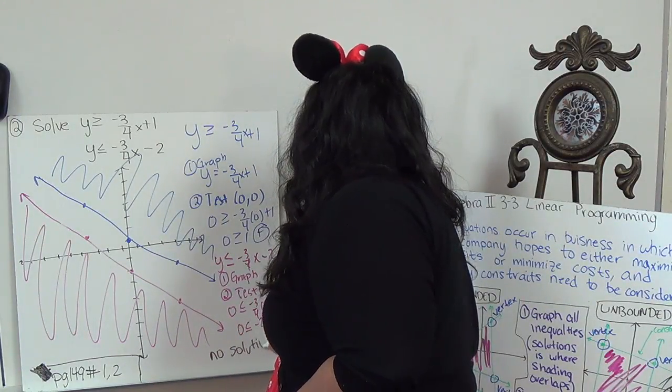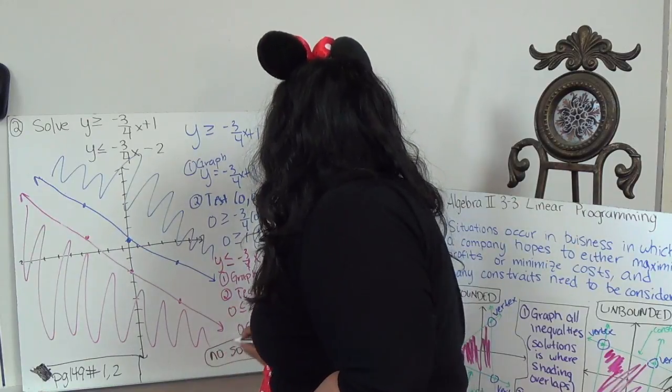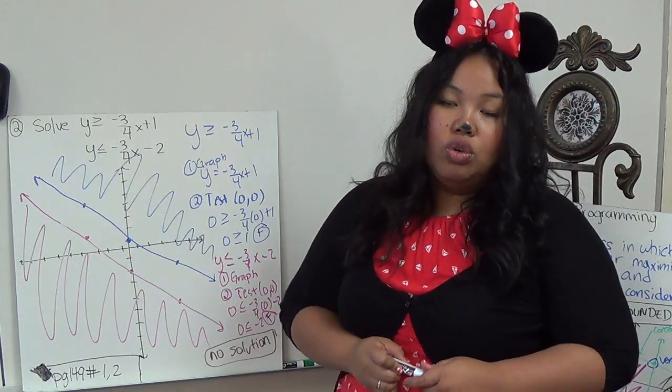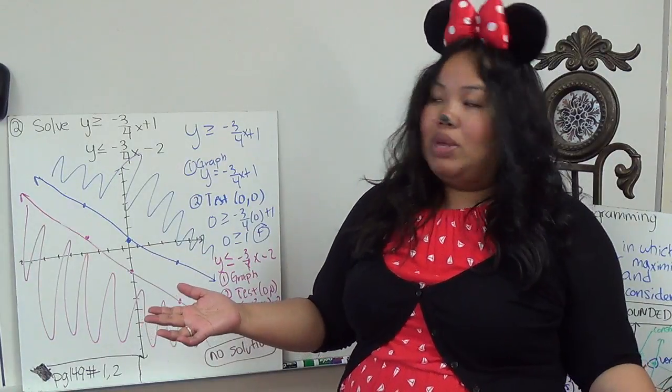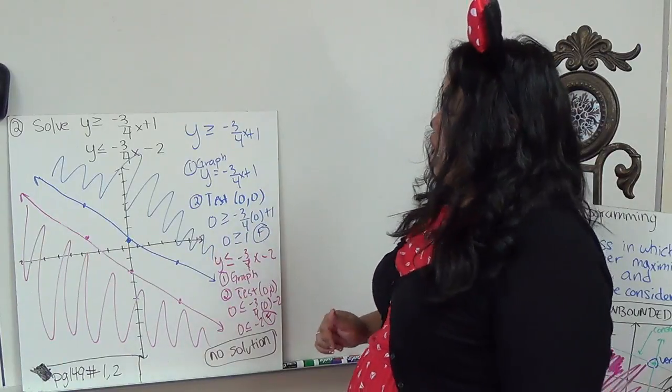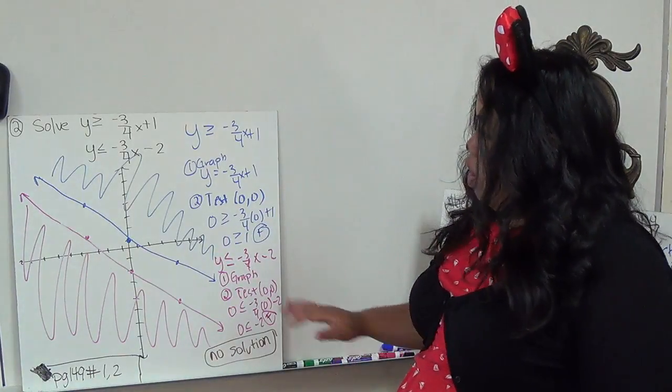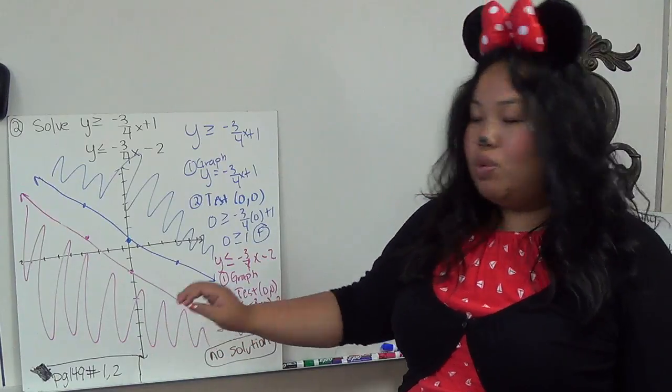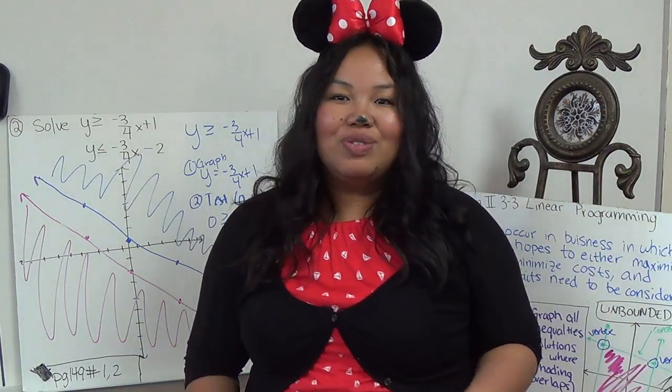That means there's not any points that you can put in here and in here and you will get true statements. If it's true for this, it's not going to be true for this and vice versa. So that's what that means. So go ahead and write this down. Try page 149, numbers 1 and 2, and I will see you in class.